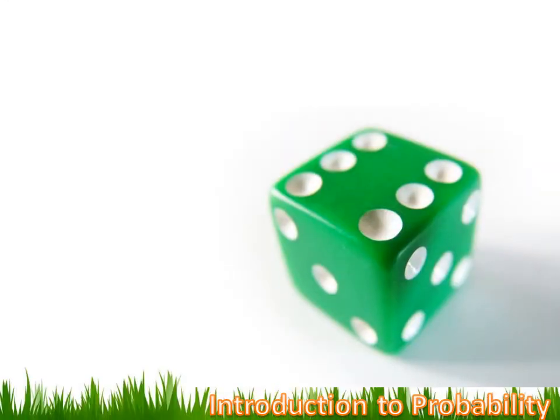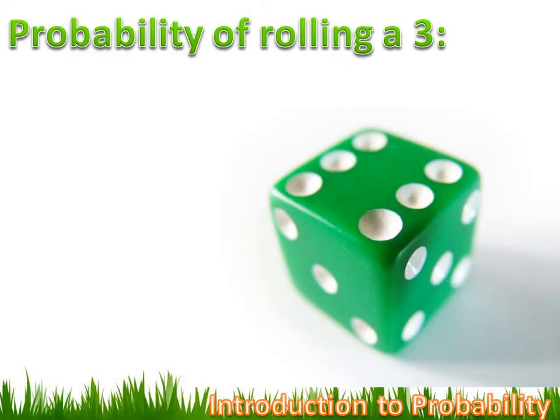Probability is easy when we flip a coin because there's only two outcomes. Let's try something a little more complicated. I only have a single die, so we'll use that. I wonder what the probability of rolling a three would be. I only win if I roll a three, so there's only one way to win, and there are six potential outcomes because there are six sides to the die. So my probability of winning is one over six.